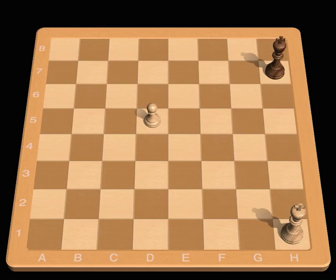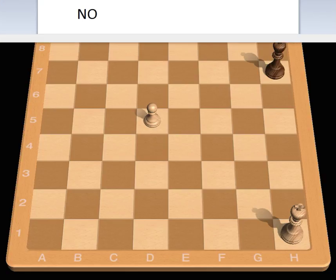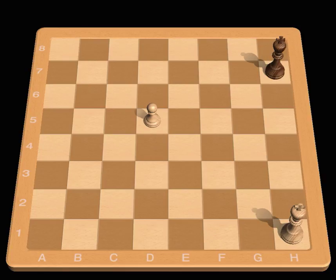White to move. Can the black king stop the white pawn from queening? That's right.